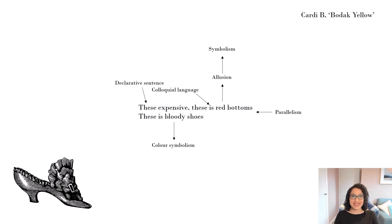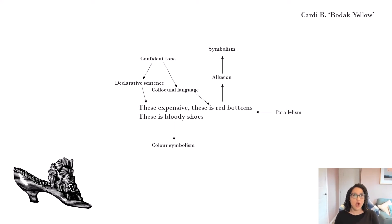We've also got the fact that these are declarative sentences — sentences which state something. Colloquial language is informal language, and the declarative sentence plus the colloquial language combine together to create a very confident tone. She is very certain of herself and very confident in her own power, both financially and physically. So overall, what you can see from what I just did is that I thought about what meaning is being created and then, when it came to analysing, I broke down how that meaning is created by picking apart all of Cardi B's choices in her language — that's why it would be called a language analysis.